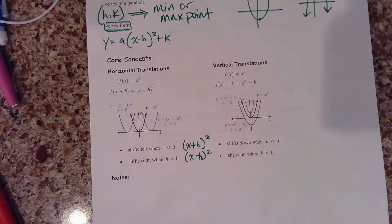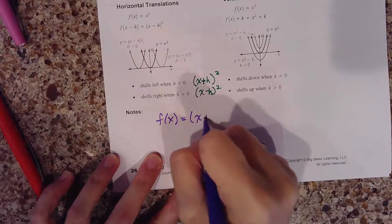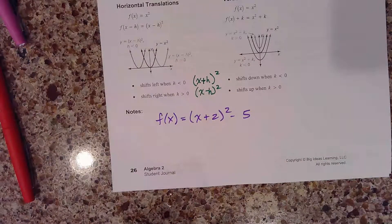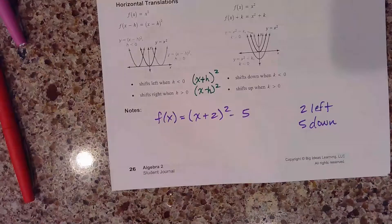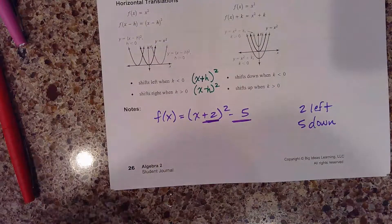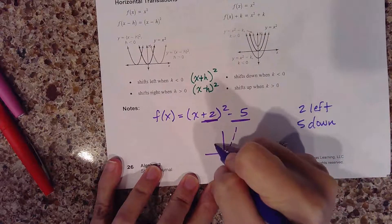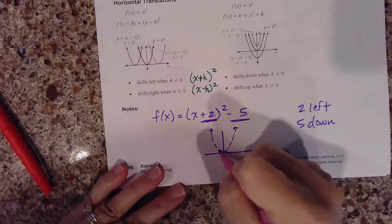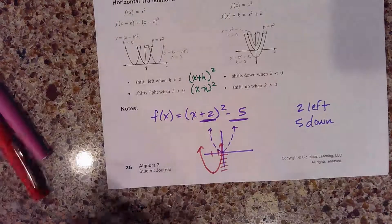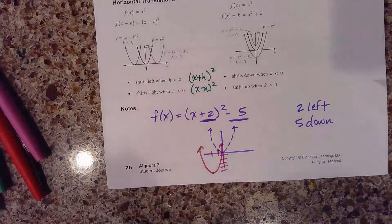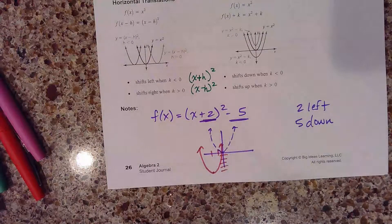I want to go over one basic example. If I gave you a function in vertex form and said describe your transformations, you might see something like x plus two, squared, minus five. That would mean two to the left and five down. If you were to graph your function compared to the parent function — which has no shifts — going two to the left and five down would shift each individual point of the parabola left two and down five.